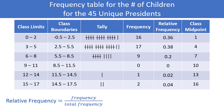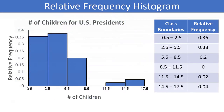A relative frequency histogram can be constructed from the relative frequency column. The shape will always be identical to that of a regular frequency histogram. The only difference is that the vertical axis shows relative frequency instead of frequency.